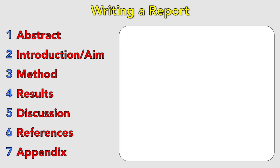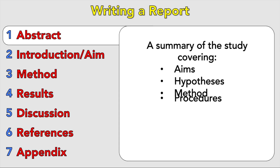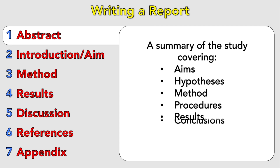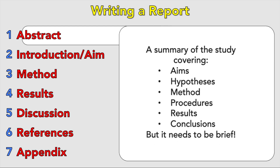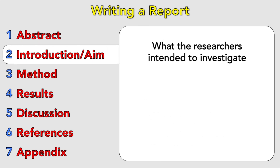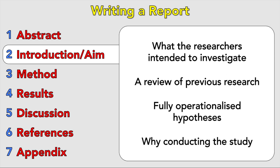Kicking off with the abstract, which is a whole report summed up in a paragraph. It includes the aims, hypothesis, procedure, results, methods and conclusions in a very brief manner, so that people who read it can see roughly what you did in your study. The introduction, or aim, is what the research is intended to investigate. This includes a review of any previous research, fully operationalised hypotheses, and generally why you are conducting the study.